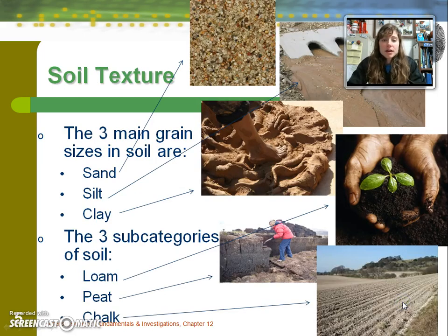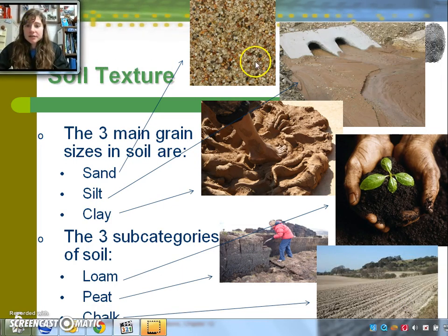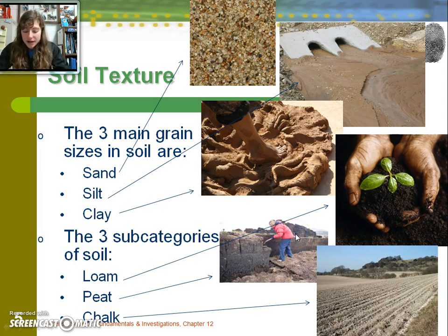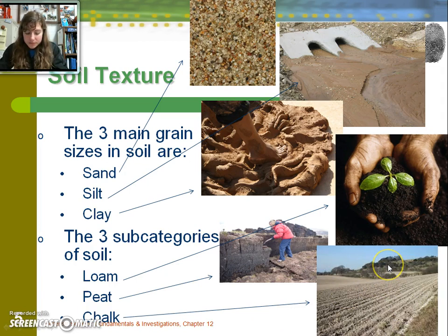The texture of soil can be categorized by three sizes: the largest is sand grains, the medium size is silt, and the smallest is clay — very fine particles. Three subcategories of soil types include loam, which is a fertile soil roughly equal in proportion of sand, silt, and clay. Peat is a boggy, acidic substance partly composed of decomposing plant and vegetation matter, often harvested for gardening and as a fuel. And chalky soil is a soft white limestone — calcium carbonate — formed from skeletal remains of sea creatures.